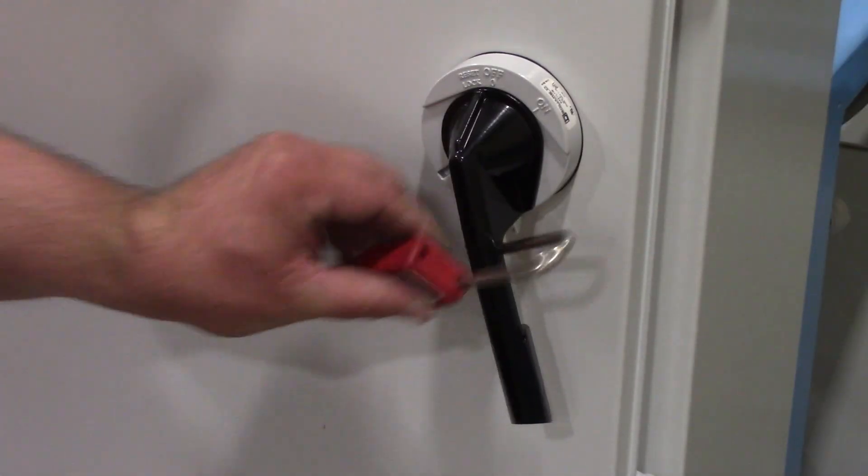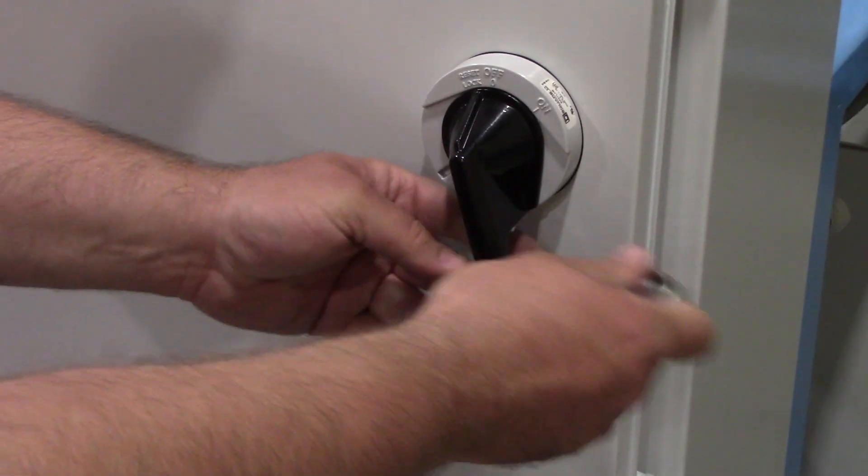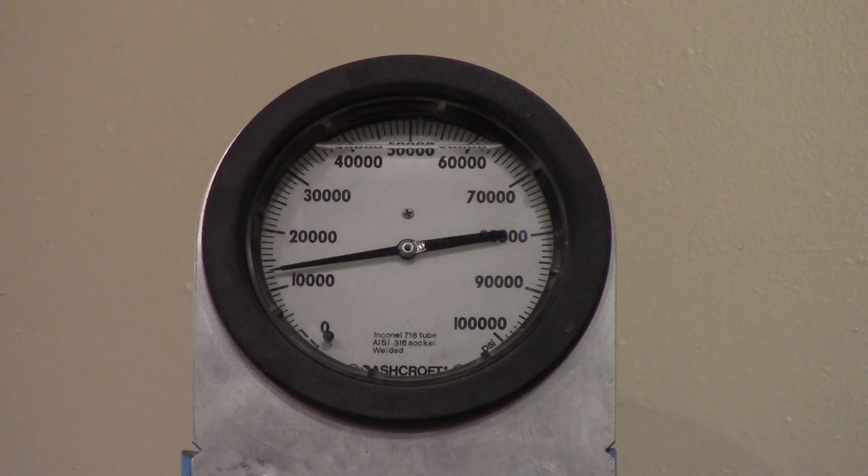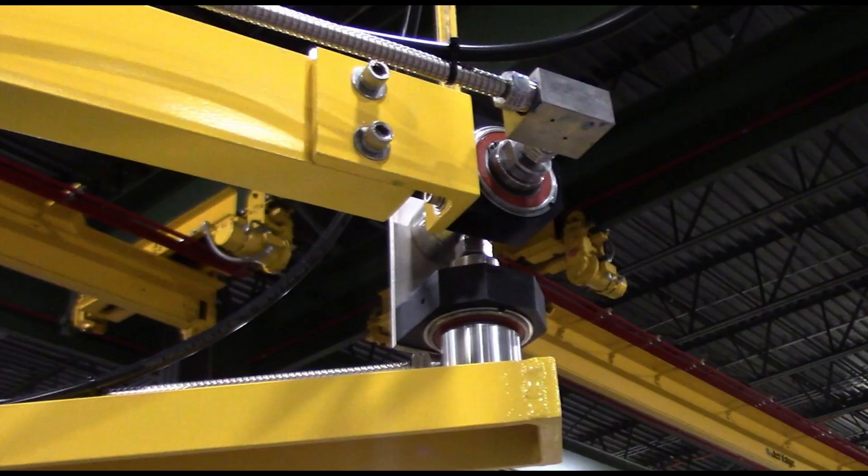Remove any lockout tagout equipment once the machine is reassembled. Turn on the intensifier pump, build up pressure slowly, and verify there are no leaks. With the swivel under pressure, verify proper machine movement and check for leaks.